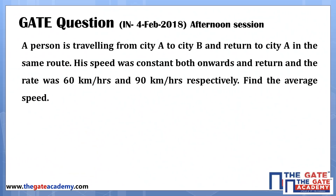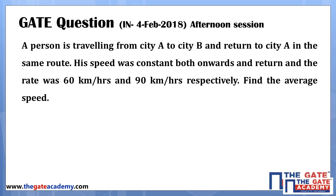The question says that a person is travelling from city A to city B and returned to city A in the same route. His speed was constant both onward and return.